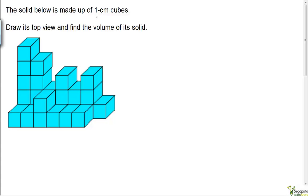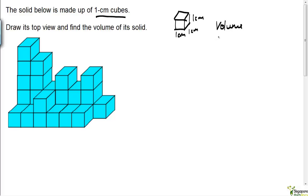The solid is made up of one centimeter cubes, meaning each cube has a side of one centimeter. Therefore, the volume of each cube is one times one times one, which is one cubic centimeter.